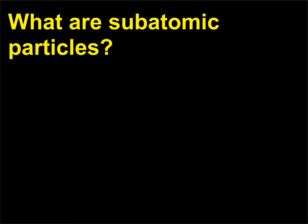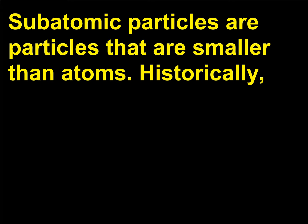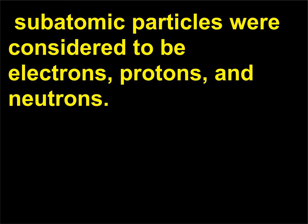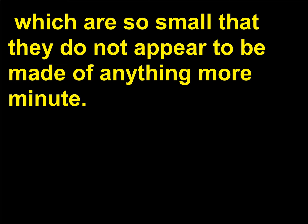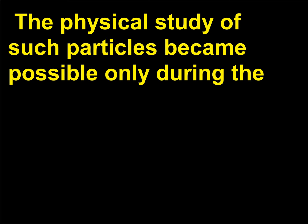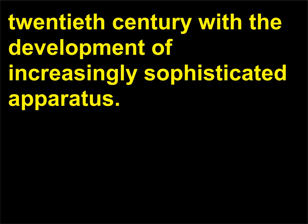What are subatomic particles? Subatomic particles are particles that are smaller than atoms. Historically, subatomic particles were considered to be electrons, protons, and neutrons. Subatomic particles have been expanded to include elementary particles, which are so small that they do not appear to be made of anything more minute. The physical study of such particles became possible only during the 20th century with the development of increasingly sophisticated apparatus.